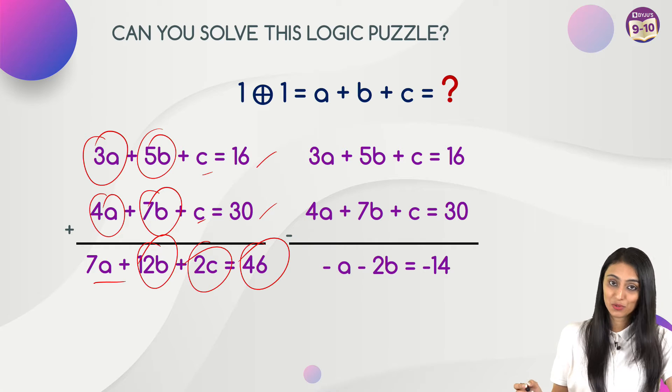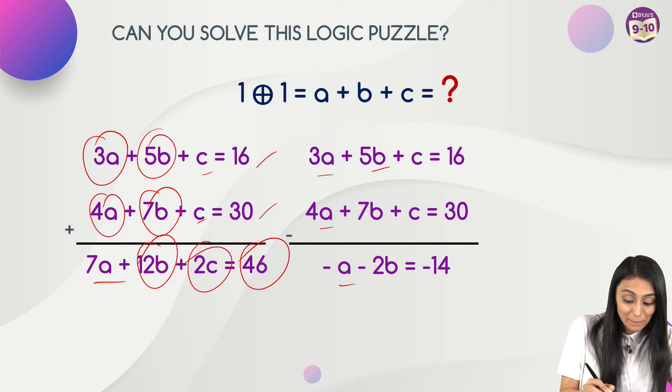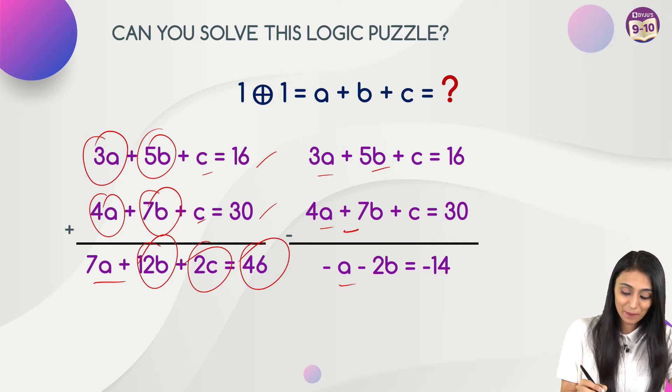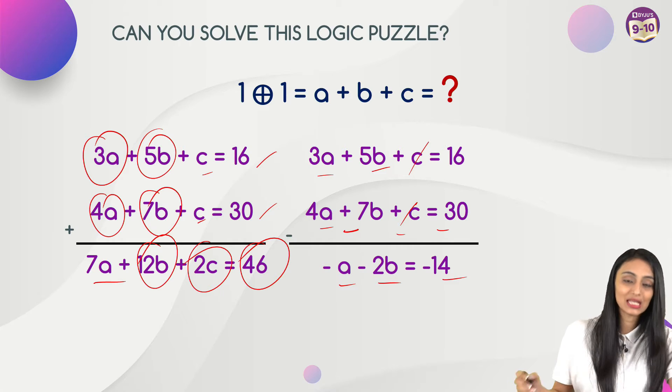Similarly, if we subtract these two equations, so 3a minus 4a is minus a. 5b minus 7b, because we are subtracting them, that's minus 2b. C and c will cancel out because the other c is negative now. 16 minus 30 is minus 14.